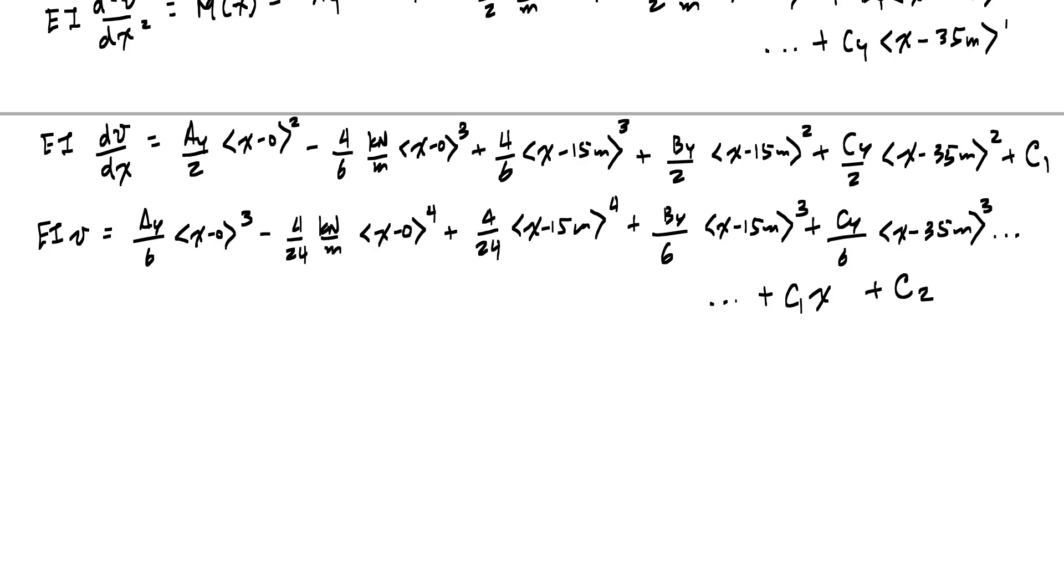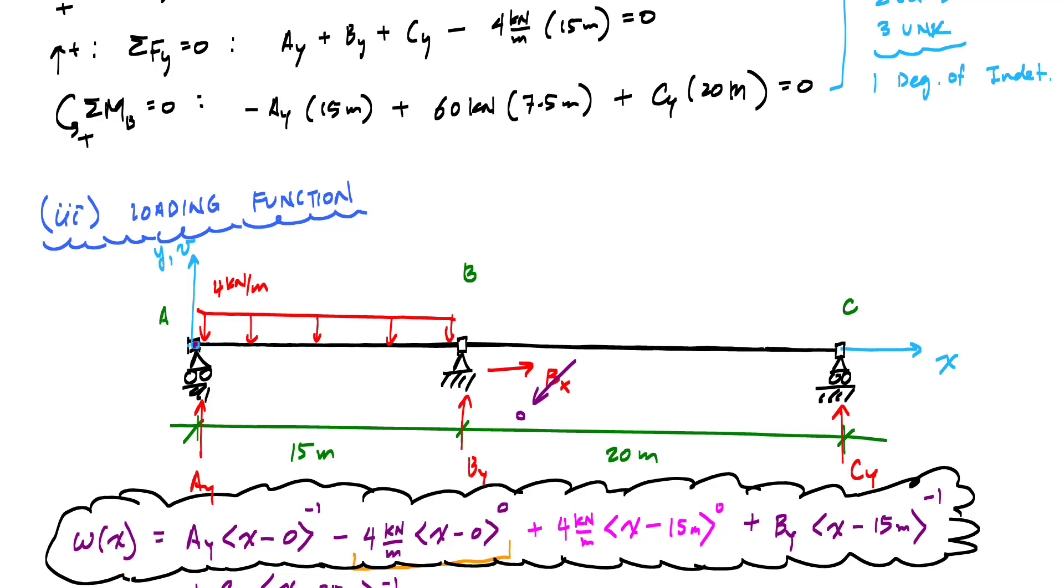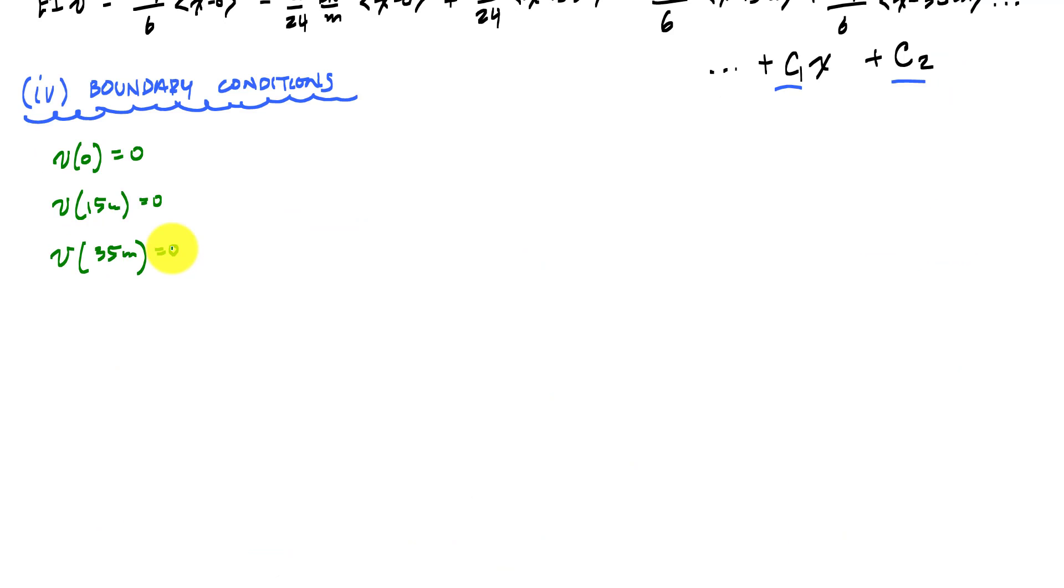The next thing I want to do is identify my boundary conditions. We're going to use the boundary conditions to solve for these unknown constants of integration plus get our extra equation to solve for the support reactions. And so when I go back and I look at my structure here, you know, wherever I have support reactions is essentially where I have a boundary condition. And so if I look at point A, I have a vertical support reaction. And basically what we're saying is this is our model of saying that point A cannot move up or down. And so that means this boundary at A would be like v of 0 equals 0. Point B cannot move up or down. And so we would say v, the vertical displacement at 15 meters is equal to 0. And then at point C, point C can't move up or down. So we would say the vertical displacement at 35 meters equals 0. Those are my three boundary conditions. And so I'm going to use them each to solve for my unknowns.